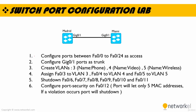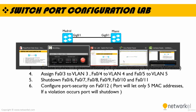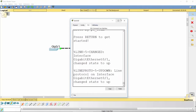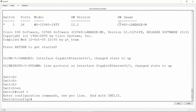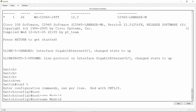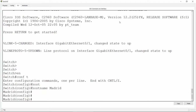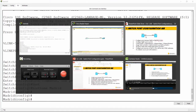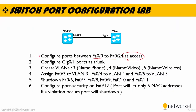The first step is to configure ports between FastEthernet 0/0 to FastEthernet 0/24 as access ports. What I need to do first is set the hostname — this is Madrid. The question in the first step is configuring the ports between FastEthernet 0/0 to FastEthernet 0/24 as access ports.